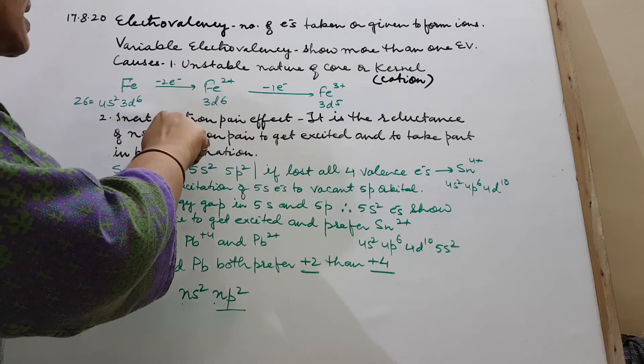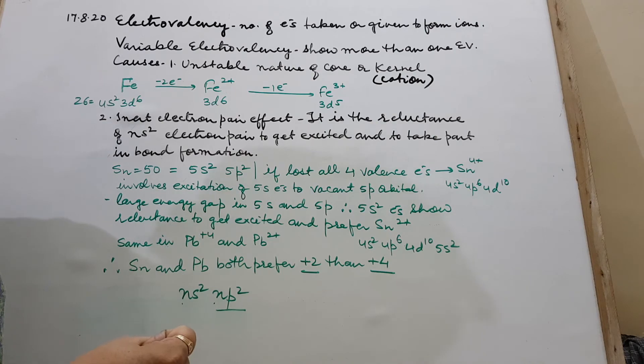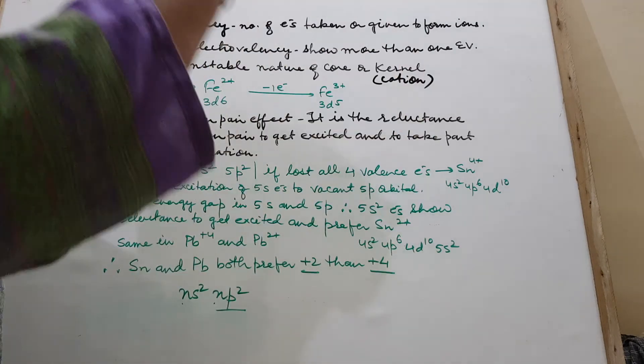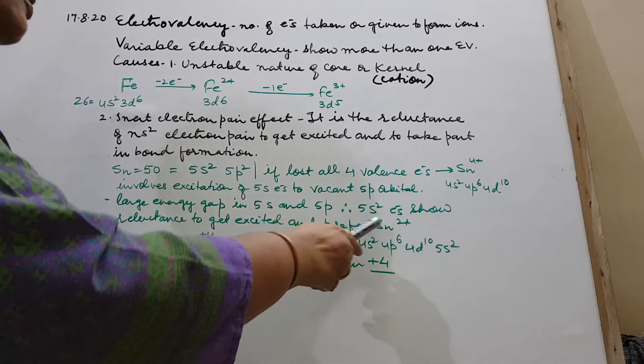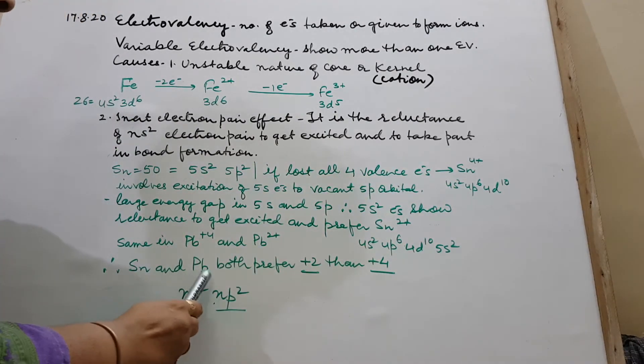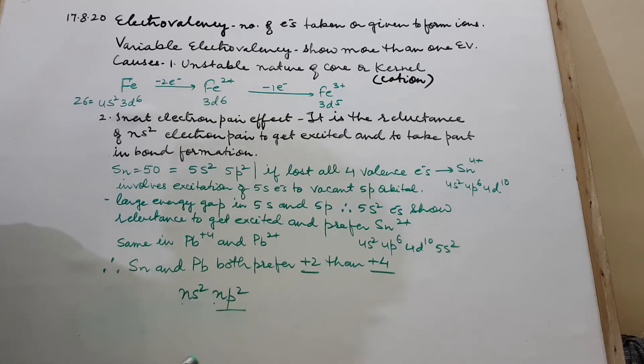And this is called reluctance of ns2 electron pair to get excited. And overall, it is called inert pair effect. That electron pair remains chemically inert. It does not take part in bond formation. And due to that, we always say that tin preferably shows plus 2, preferred plus 2 than plus 4. So Sn and Pb both prefer plus 2 than plus 4 because of inert pair effect.